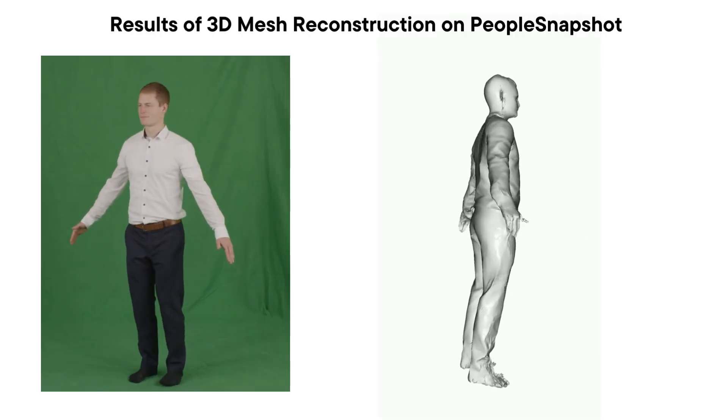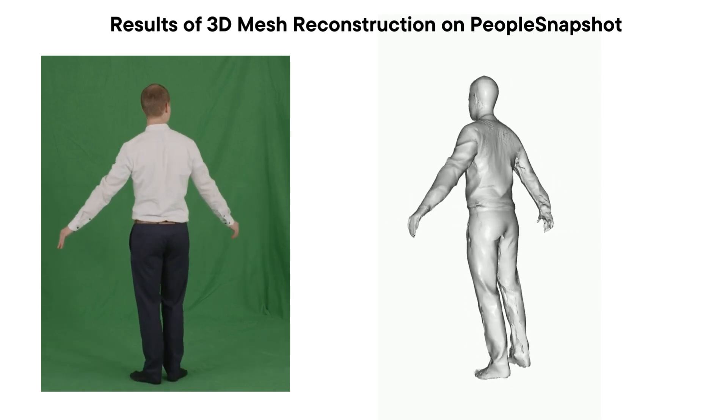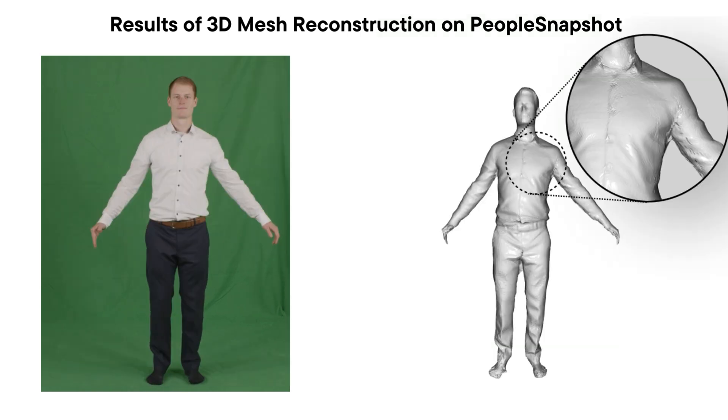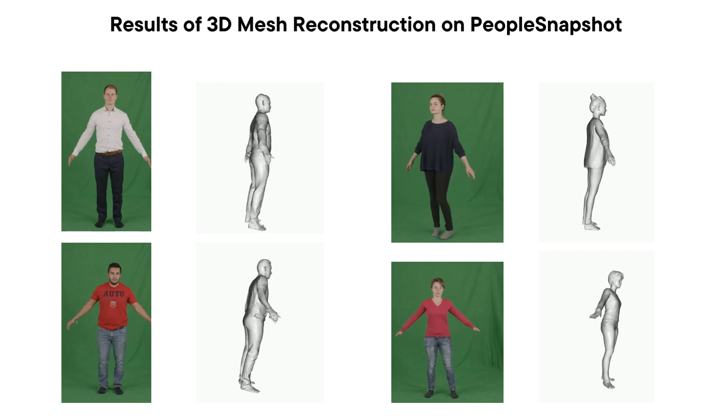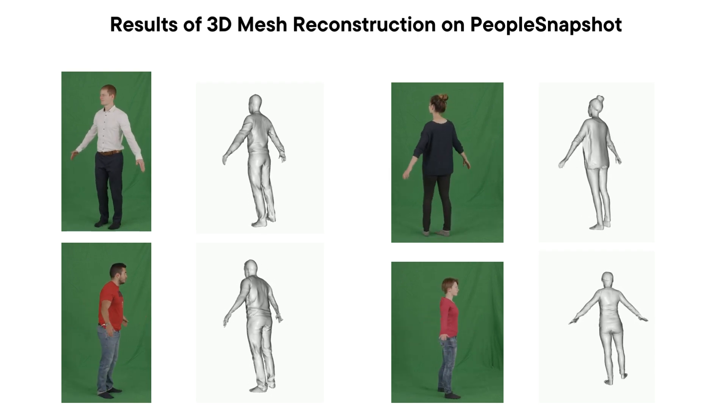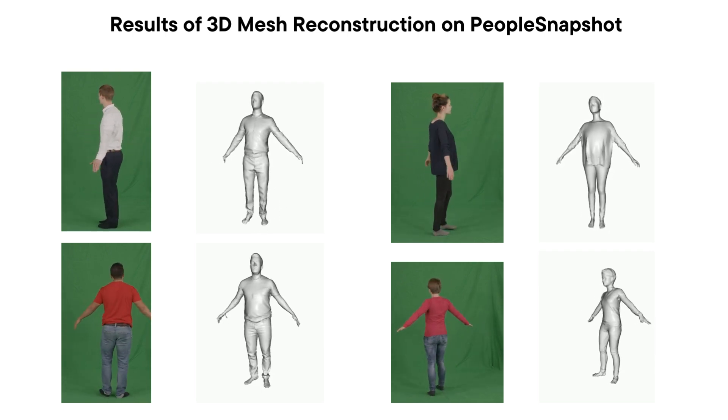Here we show some results of our mesh reconstruction on People Snapshot. Our method obtains high-fidelity mesh that can even capture subtle details like human hair and clothing wrinkles. These results are obtained without any post-processing.